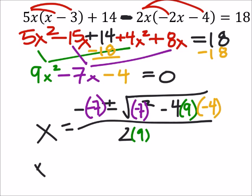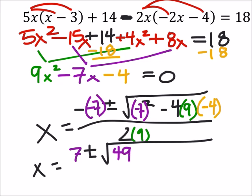So x equals a negative negative 7 is a positive 7, plus or minus the square root of 49, minus 4 times 9 times 4, so that's going to end up being a negative 144.